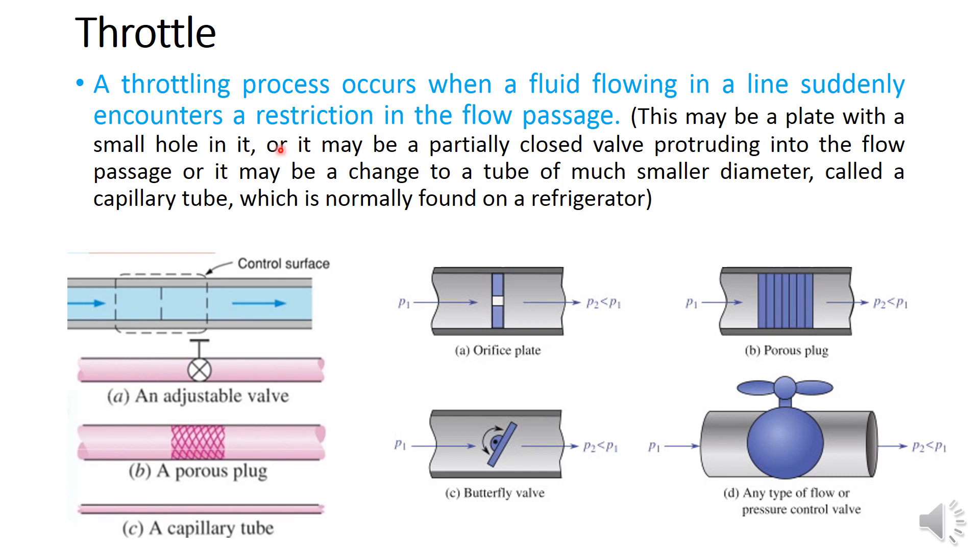As I have mentioned here, a throttling process occurs when a fluid flowing in a line suddenly encounters a restriction in the flow passage. Here I have given some examples so that you can understand the throttling process.